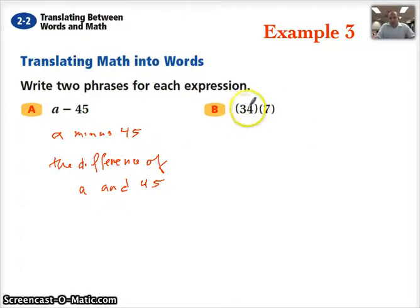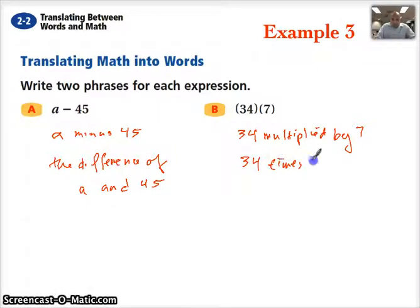Next, we have two parentheses with numbers right up against each other, or the parentheses right up against each other, and we're talking multiplication here. So we can say 34 multiplied by 7. Or we can simply say 34 times 7.